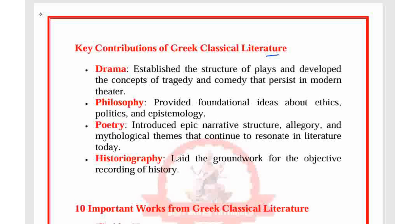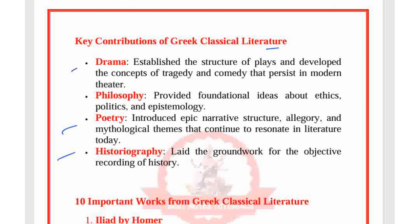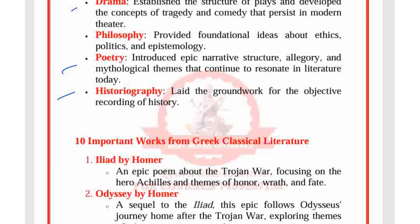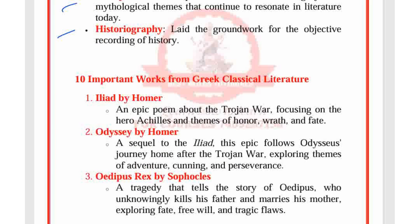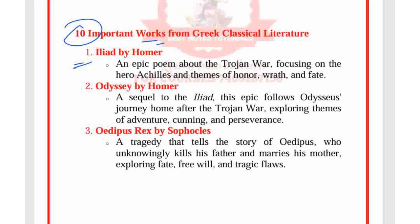Key contributions of Greek classical literature include drama, philosophy, poetry, and historiography. Among the important works, first is the Iliad by Homer — an epic poem about the Trojan War focusing on the hero Achilles and themes of honor, wrath, and fate. Second is the Odyssey by Homer, a sequel to the Iliad, following Odysseus' journey home after the Trojan War.